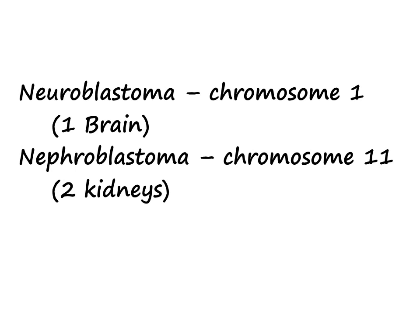Nephroblastoma is chromosome 11, or two ones, because the word 'one' contains 'n' and 'neuron,' and nephroblastoma starts with 'n.' The confusing part is which is chromosome 1. We have one brain, so chromosome 1 is neuroblastoma, and we have two kidneys, so chromosome 11 is nephroblastoma.